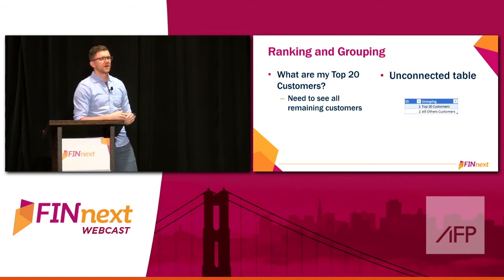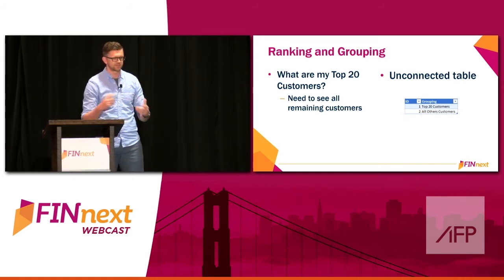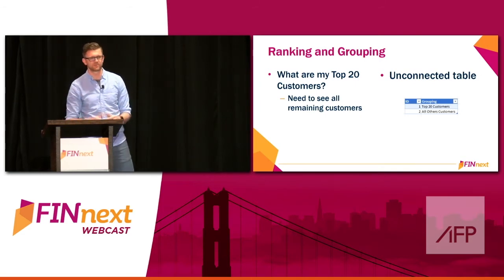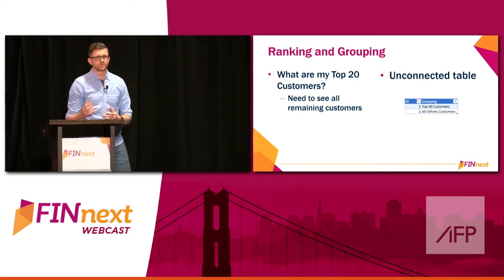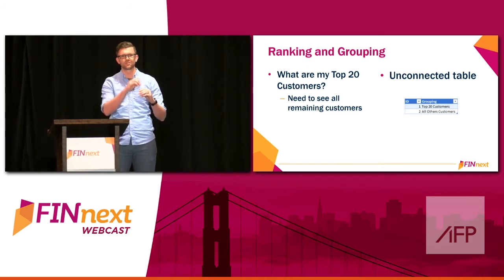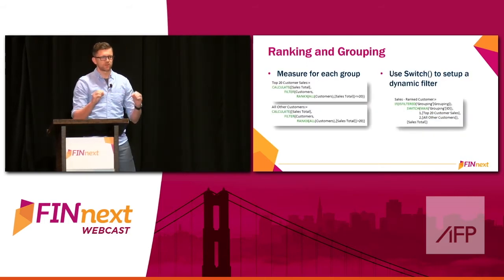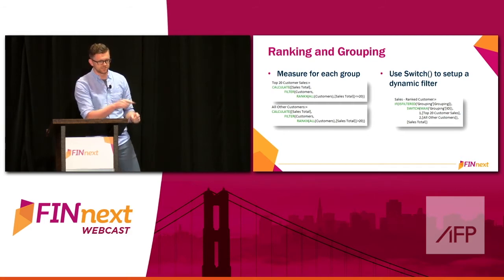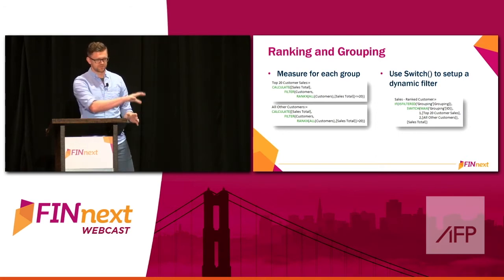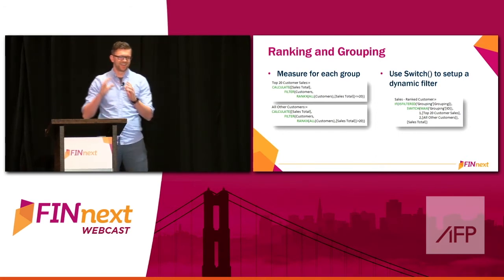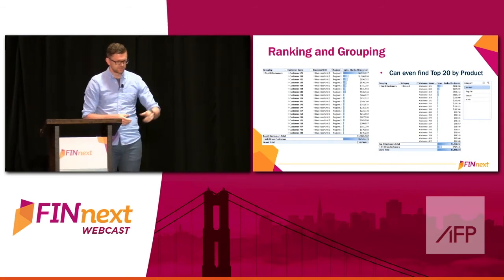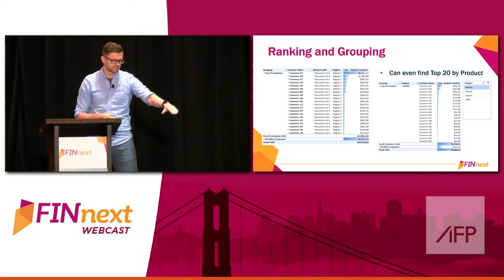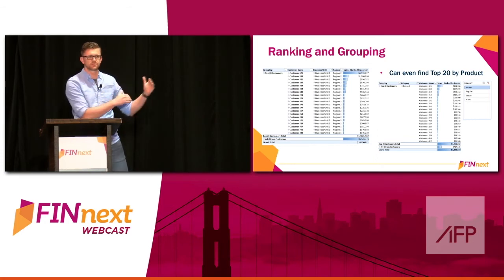My boss always asks another question after I answer one — he always has the next question. He wants to know who his top 20 customers are. On top of the same model, you can start adding ranking and grouping so you can see comparisons. A pivot table is only going to show you that top 20 — it won't show you everything else below. Using these formulas, you'll be able to see your top 20 and then everything else underneath, all summed up. So you can see our top 20 customers and all other customers together on one pivot table, which is impossible in basic Excel.